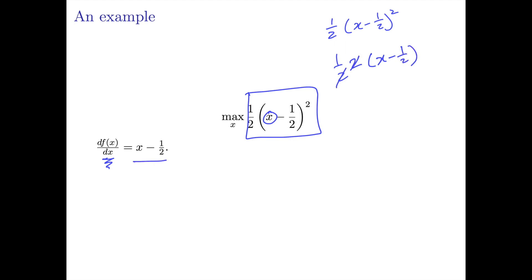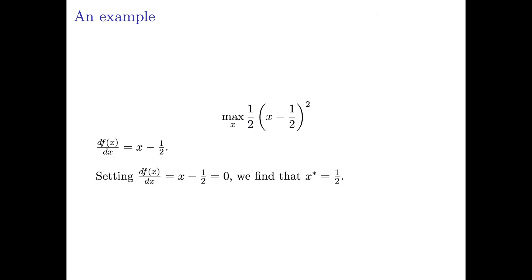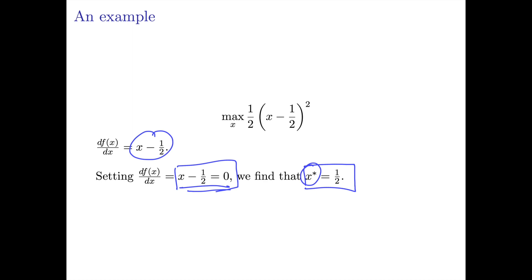The 2's cancel, and so we're left with x minus one-half as the derivative. So if we want to find the x that gives the maximum value, we just set this derivative equal to zero. And if we solve for x — we just add one-half to either side — we get the solution one-half. One convention that we often use is to use a little star or asterisk to represent the solution to the maximization problem. So in this case, the x that gives us the highest value of one-half times x minus one-half squared is one-half, so we represent that solution by x star.